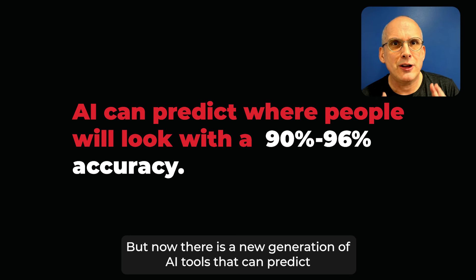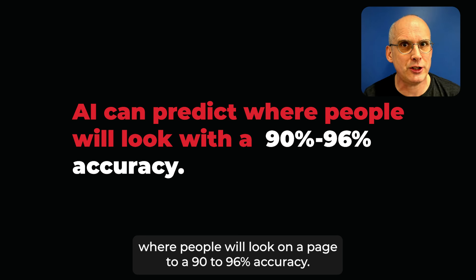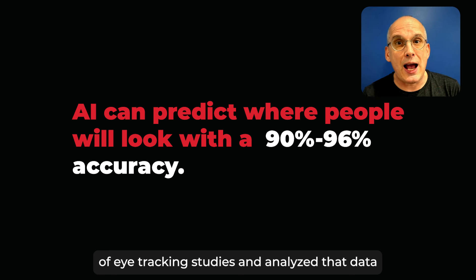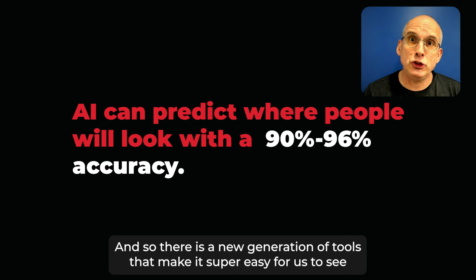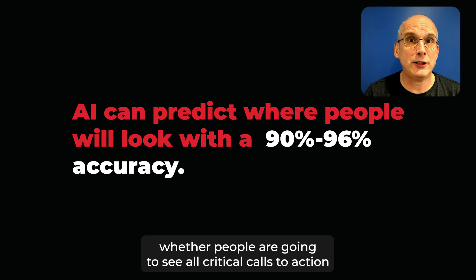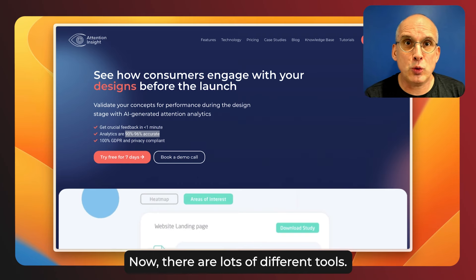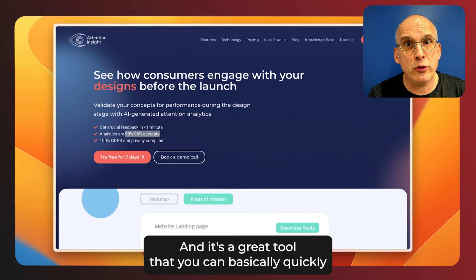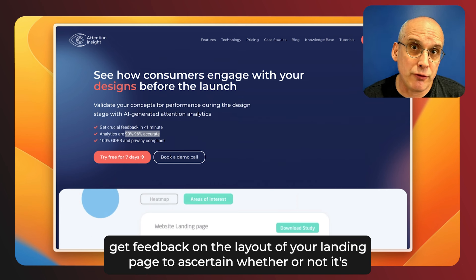Testing the layout of your page has traditionally been a little bit cumbersome, but now there is a new generation of AI tools that can predict where people will look on a page to 90 to 96% accuracy. The way they do that is by taking thousands of hours of eye tracking studies and analyzing that data in order to make predictions about where people will look. There is now a new generation of tools that make it super easy to see whether people are going to see your critical calls to action, strap lines, or key messaging.